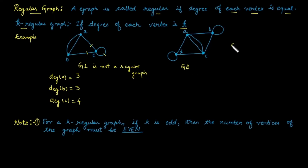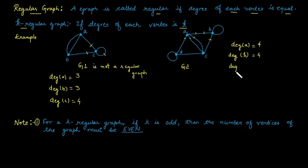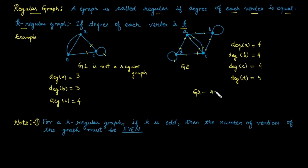For graph G2, the degree of vertex a is four edges, so degree is four. Degree of vertex b is four. Degree of vertex c: four edges are associated with it. Degree of vertex d: two incident edges plus one self-loop counted as two, giving degree four. Since the degree of each vertex is the same, G2 is a regular graph.